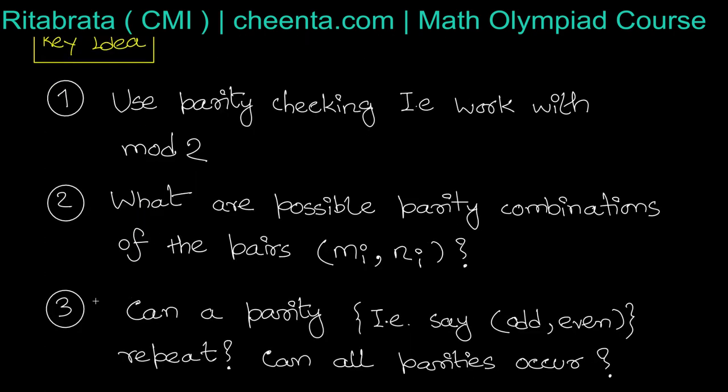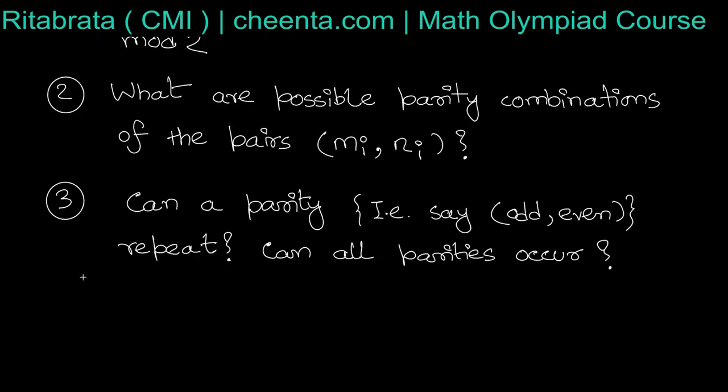Asking what are the possible values of r is the same as asking how many (mᵢ, nᵢ) pairs are possible. For that we can do parity checking of the pairs: how many different parity pairs can occur, how many odd-even pairs are possible, how many even-odd pairs are possible.